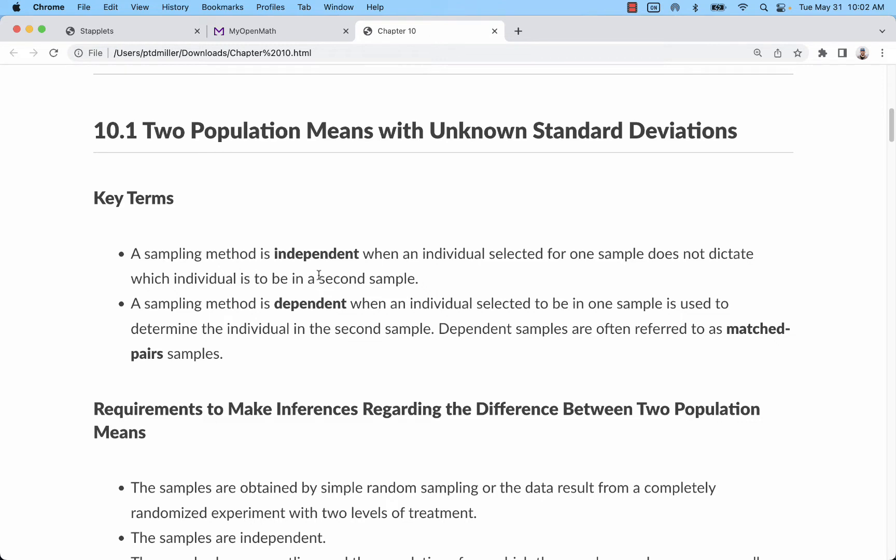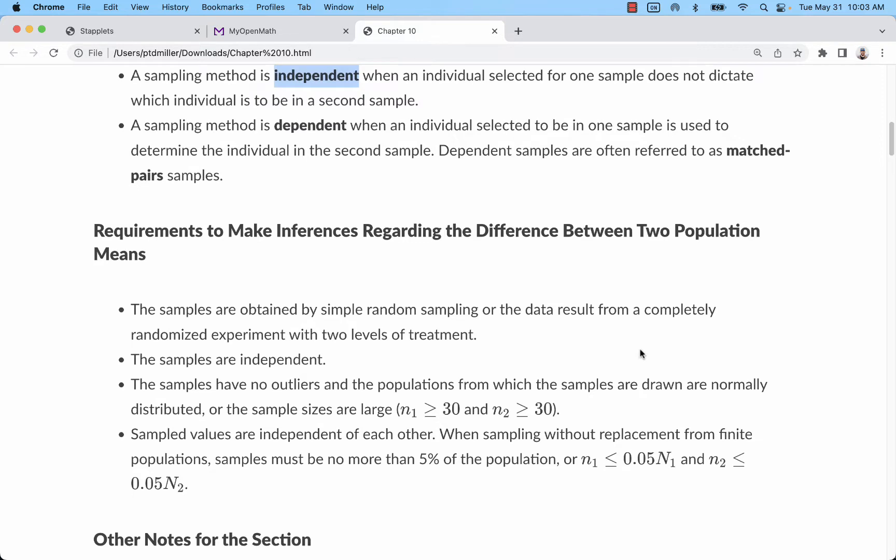Essentially we have the same variable in two populations. For example, we're looking at ages of people in two different companies or ages of different genders within one company. Either way, what we're comparing is kind of very different groups, but it's the same measurement from those groups. The situation that we won't look at is dependent or matched pairs samples. In those situations, you would actually measure like a before and after or identical twins. We're going to focus on independent sampling to compare two populations.